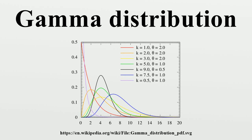In probability theory and statistics, the gamma distribution is a two-parameter family of continuous probability distributions. The common exponential distribution and chi-squared distribution are special cases of the gamma distribution.